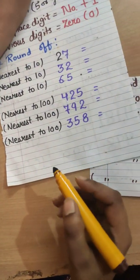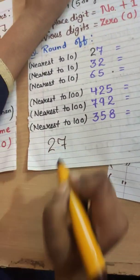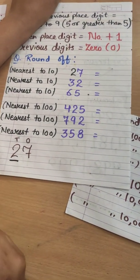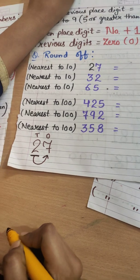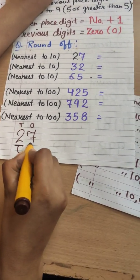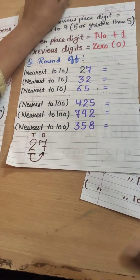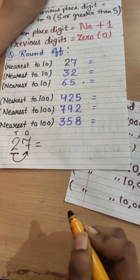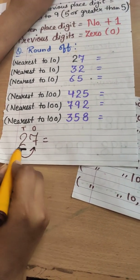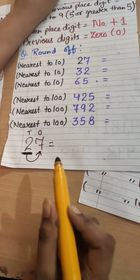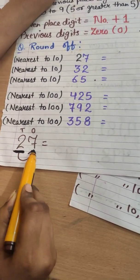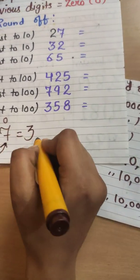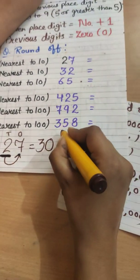For our example number 27, we have to round it off to the nearest tens place. The tens place digit is 2 and its previous digit is 7. Is 7 smaller than 5 or greater than 5? It is greater than 5, so the tens place digit also becomes one step greater: 2 becomes 3, and the previous digit becomes 0. So 27 rounded to the nearest ten is 30.